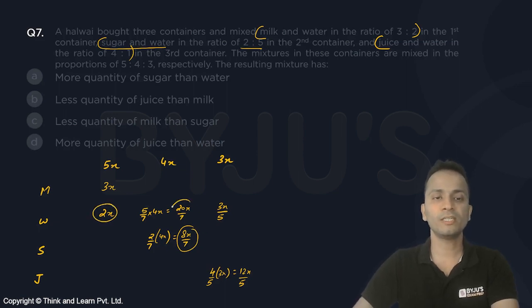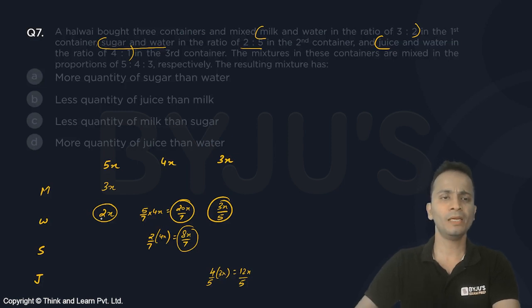Now 8 by 7x, which is sugar, is 1.1 something. It is even less than the amount of water from the first container. So definitely sugar is less than water, not more than water, so option A cannot be correct.